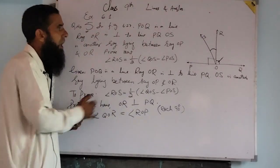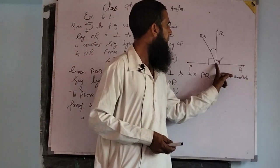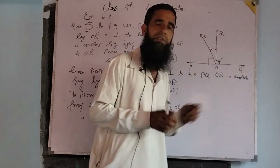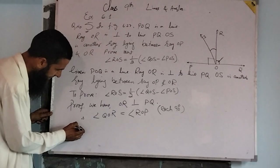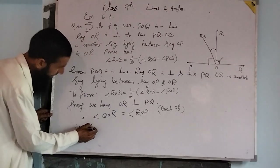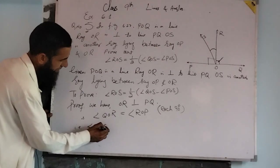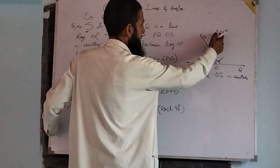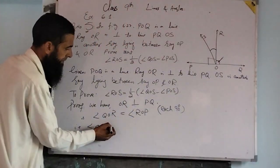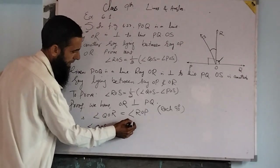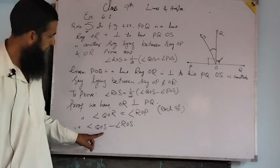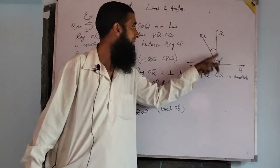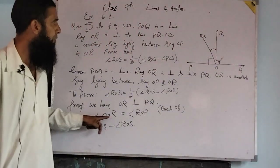Now, dear students, angle Q-O-R can be written as angle Q-O-S minus angle R-O-S. See this: angle Q-O-S minus angle R-O-S gives us angle Q-O-R.